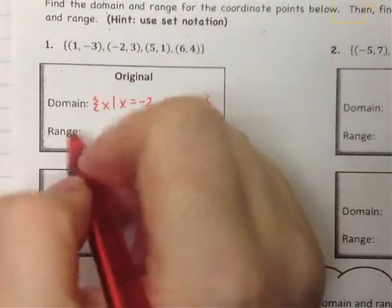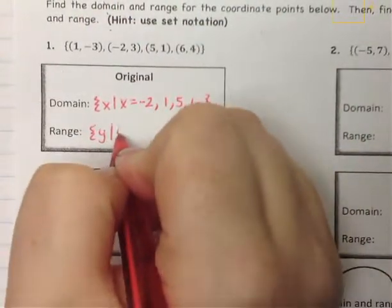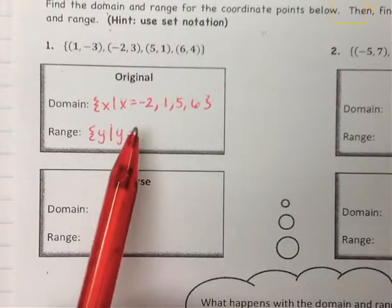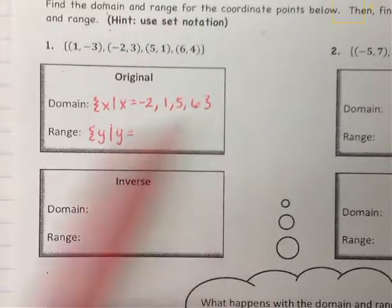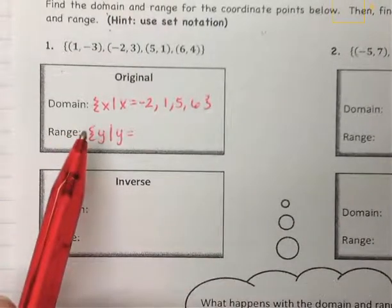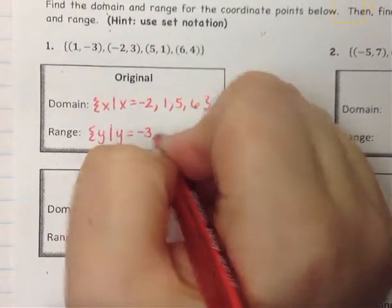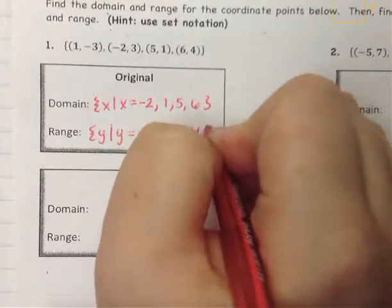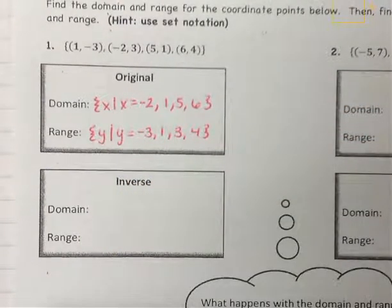For the range, we're going to do the same thing but for the y values. So squiggle bracket, y such that y is equal to. We use equal to because it's not including all the numbers in between — it's just including the specific values we have. So the smallest y value is negative 3, then 1, then positive 3, then 4. Those are all of our y values.